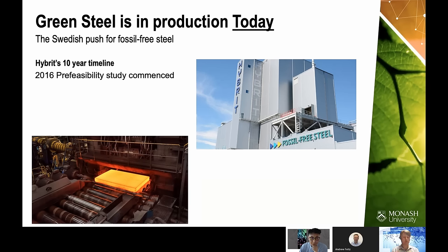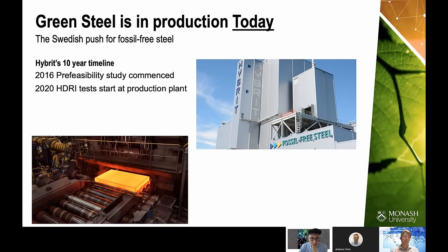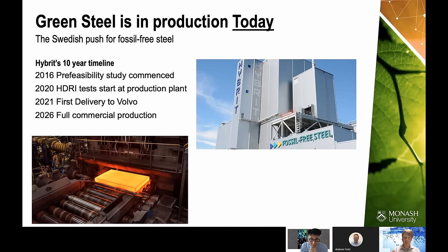Several companies in Sweden have been pushing for fossil-free steel production. HYBRIT is probably the furthest along: they began a feasibility study in 2016, started tests of hydrogen direct reduced iron production by 2020, and had their first delivery of steel to Volvo last year. They're planning to reach full commercial production by 2026 — a 10-year timeline from pre-feasibility to full commercial production. This is not something that will take 20 years; we could potentially do it within a decade.